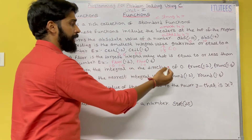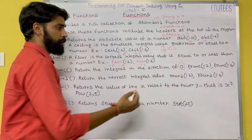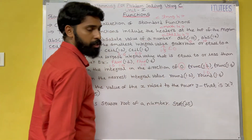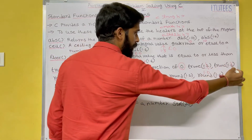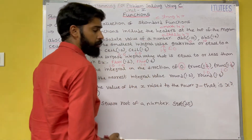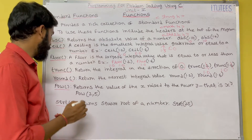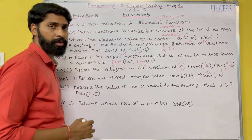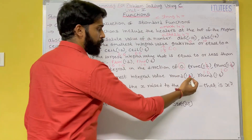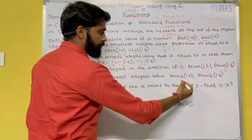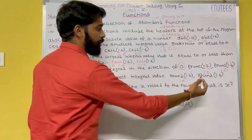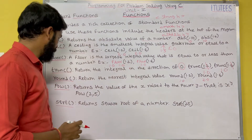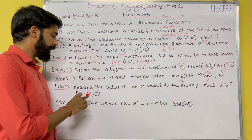Next is trunc() — it returns the integral part in the direction of zero. So trunc(1.0) returns 1.0, and trunc(1.6) truncates the 6 and also returns 1.0. Similarly, round() returns the nearest integral value. So round(1.2) returns 1.0 and round(1.6) returns 2.0.